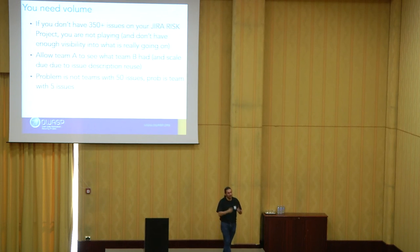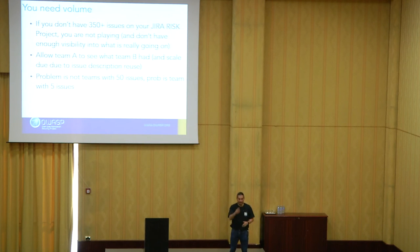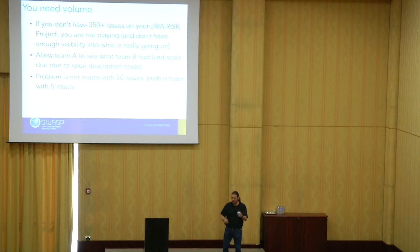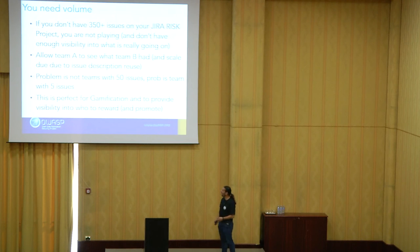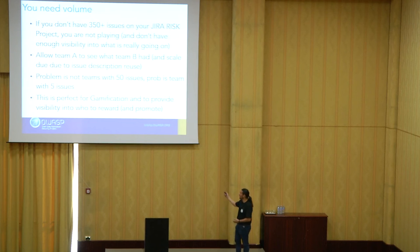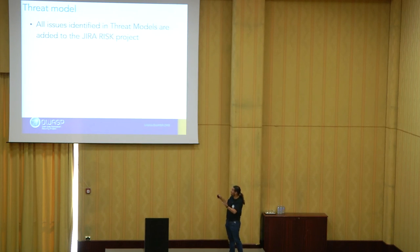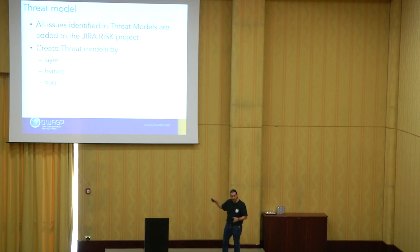Your problem is not the team that has 50 issues and is working through them — your problem is the team handling highly critical stuff with zero documented risks. When you ask them if they have any risks or worries, they say, 'Nah, it's all cool here.' But that asset is really important to the company — how come there's no awareness? Teams with no security risks are usually the ones where you find the OWASP Top 10 on them. That's why you need volume. This is also perfect for gamification — you can reward people who find more stuff and send devs to conferences.